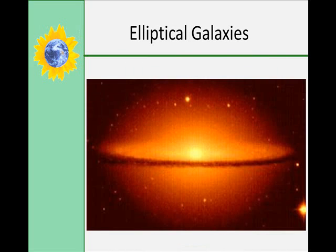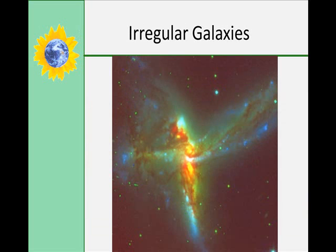Elliptical galaxies appear round, oblong, or flattened. They have no spiral arms and are generally smaller than the other types of galaxies, and they contain very many bright young stars. The most common type of galaxy is an elliptical galaxy — about 70% of all galaxies that we've seen are elliptical. Finally, irregular galaxies have no regular shape, thus the name. These are smaller than the other galaxies and also account for about 15% of all the galaxies we know of.